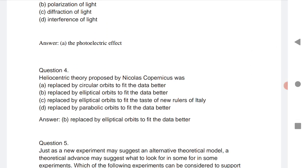Fourth is: heliocentric theory proposed by Nicholas Copernicus was replaced by elliptical orbits to fit the data better.